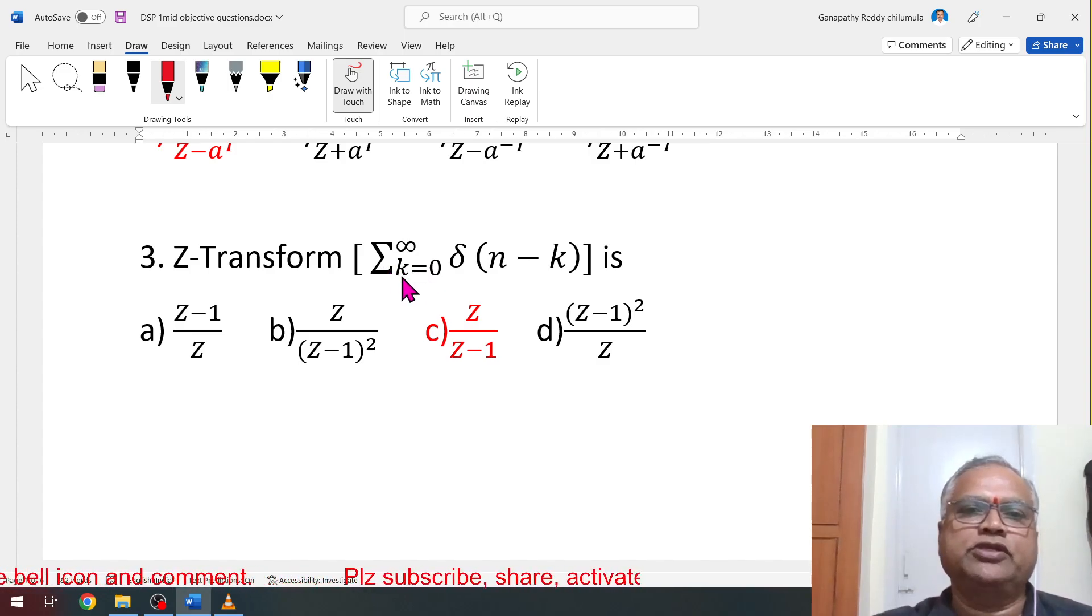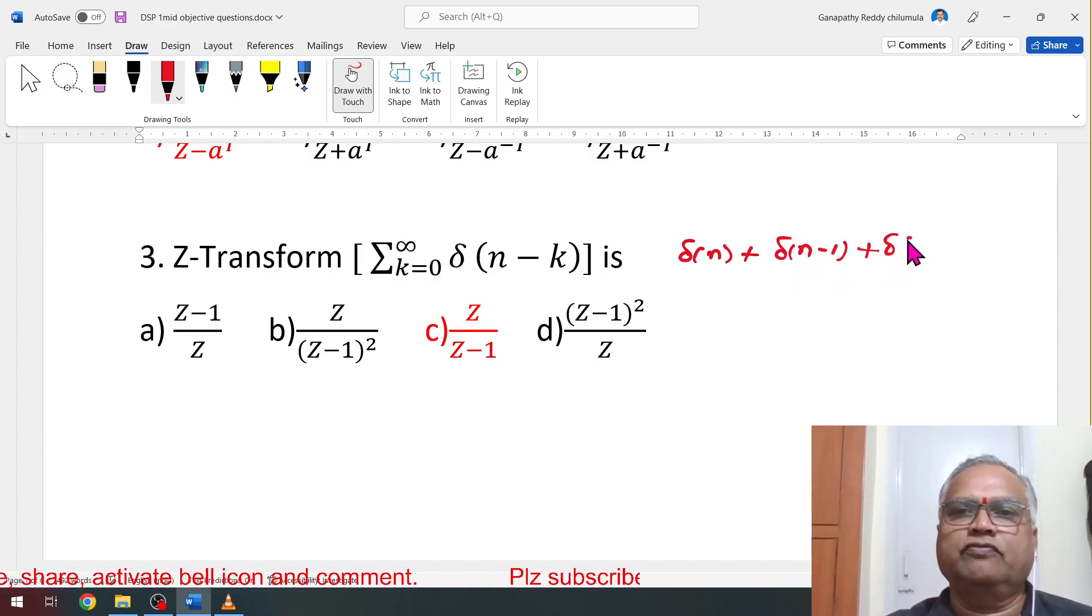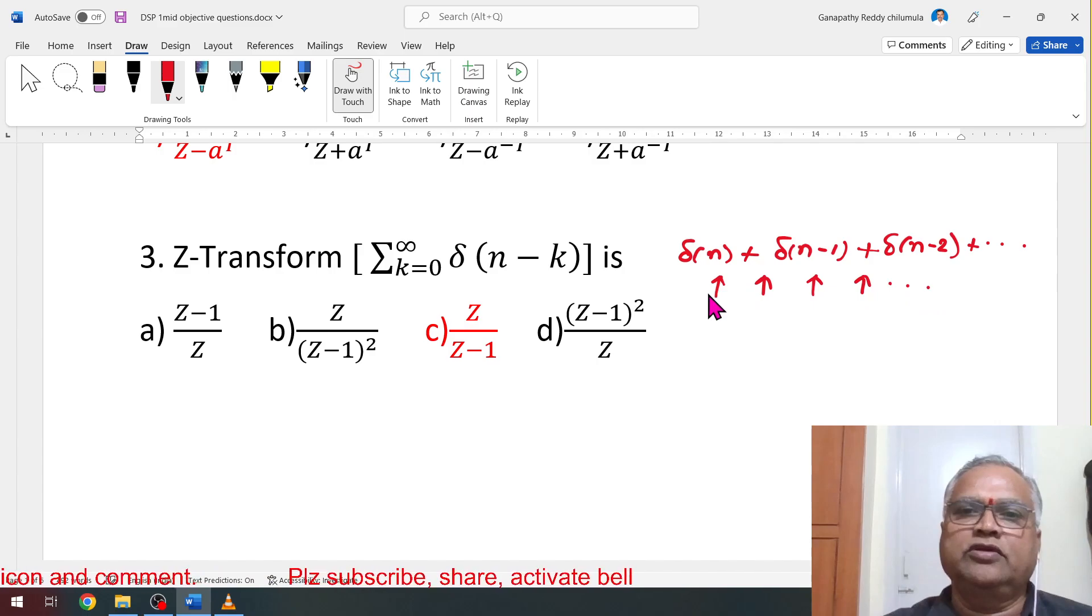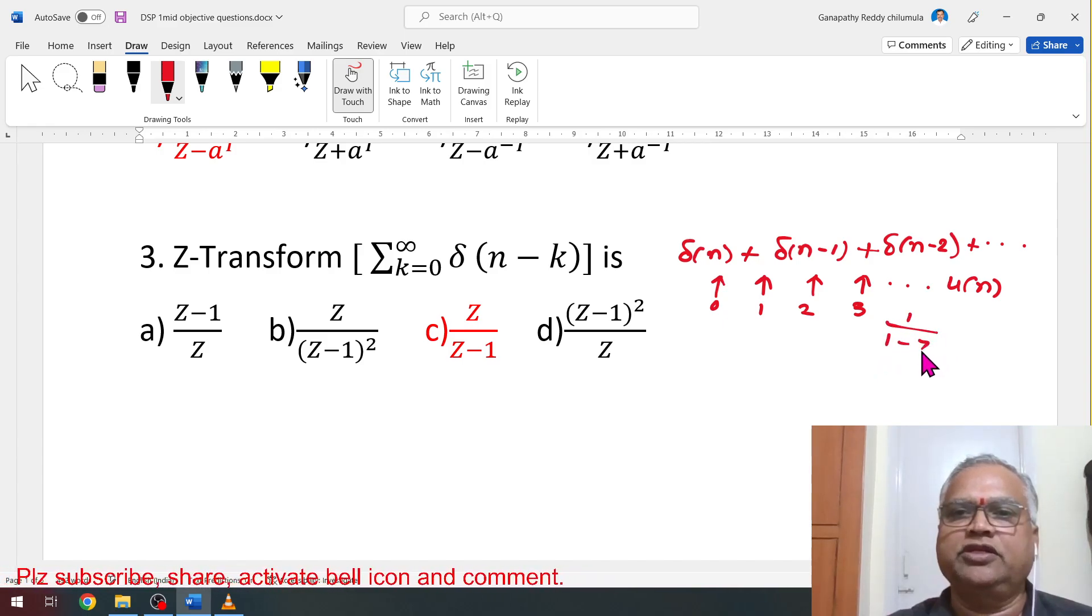Then Z-transform of summation k equal to 0 to infinity delta(n-k) is: if we expand this one, if k equal to 0, you get delta(n), then delta(n-1) plus delta(n-2). Like that it will come values. If you plot it, at n equal to 0, 1 impulse will come, n equal to 1, n equal to 2, n equal to 3. What kind of signal it is? Simply u(n). What is u(n) Z-transform? Z by, it is actually we remember in this format: 1/(1-Z^(-1)), which is equal to Z/(Z-1).